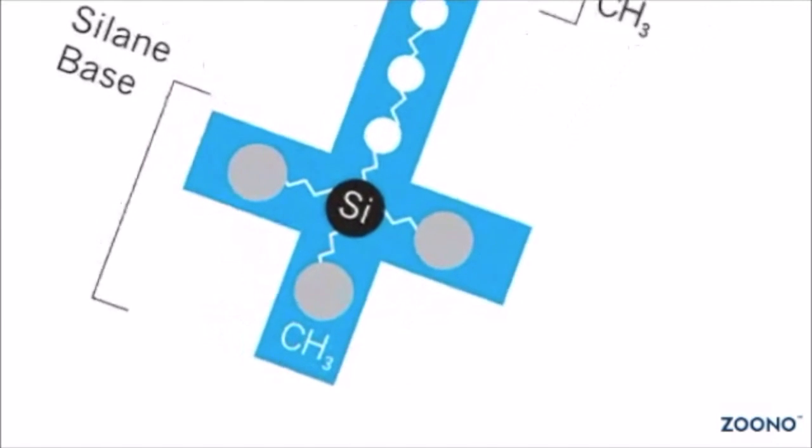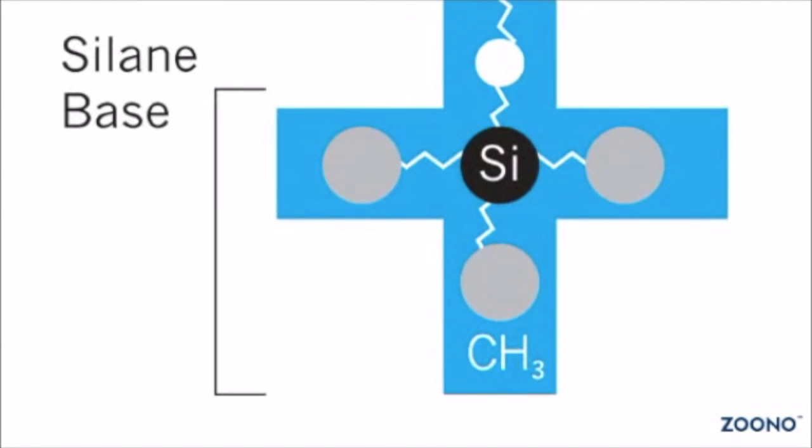The first part is the silane base. This silane base is the antimicrobial's anchor. It is anchored by covalent bonds which are formed readily through hydrolysis reactions that bond Zonoside permanently to almost any surface.